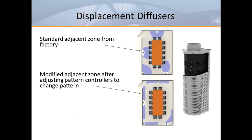In this example, we show how several seating locations around the conference table would likely fall into the adjacent zone of a standard radial pattern diffuser. Then we show how adjustable pattern controllers could be set to kick the air along the walls and away from the occupants. With non-adjustable diffusers, it would be completely up to the designer to select a product that would avoid any comfort issues, and there would be no flexibility for future needs.